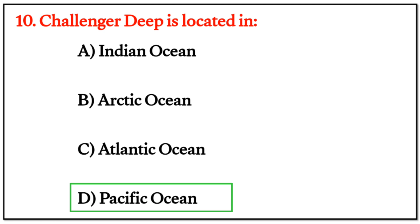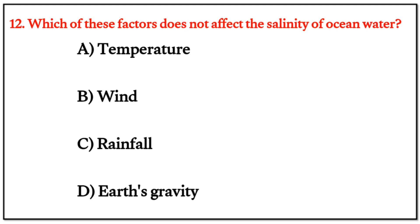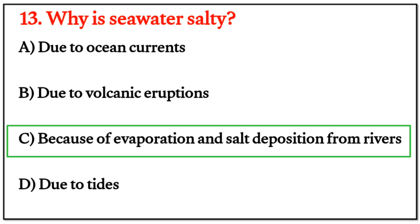MCQ Question 11: The average salinity of ocean water is — the right answer is C: 35 parts per thousand. Question 12: Which of these factors does not affect the salinity of ocean water? The right answer is D: earth's gravity. Question 13: Why is sea water salty? The right answer is C: because of evaporation and salt deposition from rivers.